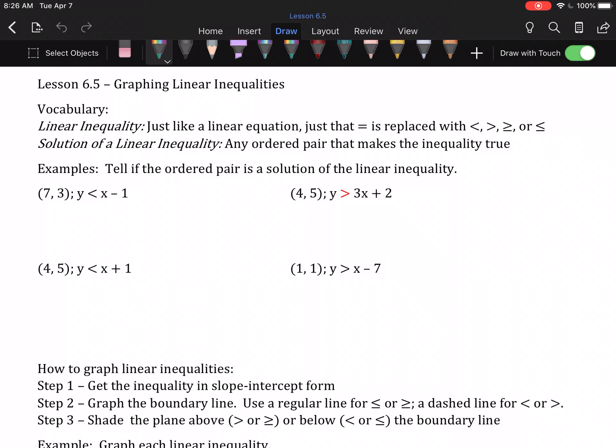So in the first example here, I'm given the ordered pair (7, 3) to check in the inequality y is less than x minus 1. The one thing you've got to make sure is that you put the numbers in the right places. 3 is y, 7 is x. 7 minus 1 is 6. Is 3 less than 6? No. Yes. Sorry, it's 8:30 in the morning, I'm not fully awake yet, I haven't had any coffee. 3 is less than 6. So yes, that ordered pair is a solution.